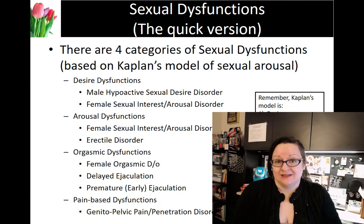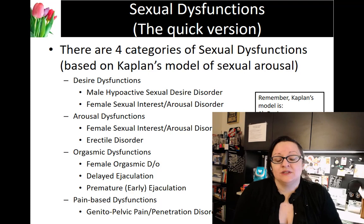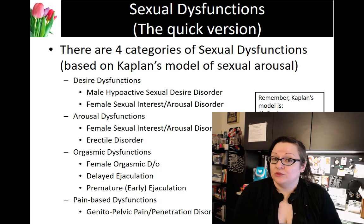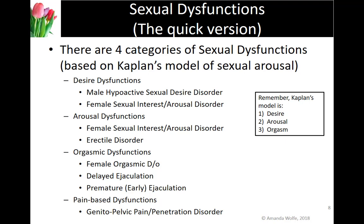There is actually no diagnostic code for someone whose sexual desire is too high. Is it possible that someone's sexual desire could be so high it causes problems? Absolutely. But we don't have a diagnostic code for that. Hopefully as master's students you're already aware the DSM is flawed. In this case we might want to talk about impulse control disorder or other ways of diagnosing sexual addiction, because there is also no sexual addiction diagnostic code yet.